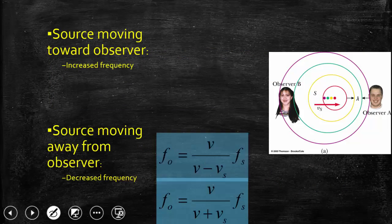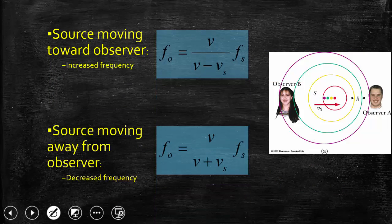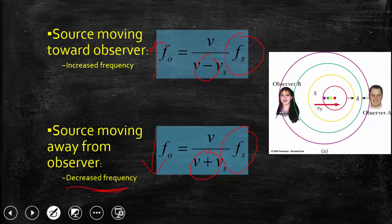Based on it, we are writing two conditions. Source moving towards observer — frequency should increase — so in the denominator you get a minus sign, so that this term is bigger than this term. Source moving away from an observer — decreased frequency — so in the denominator there will be a plus sign, so that this quantity is lower than this.